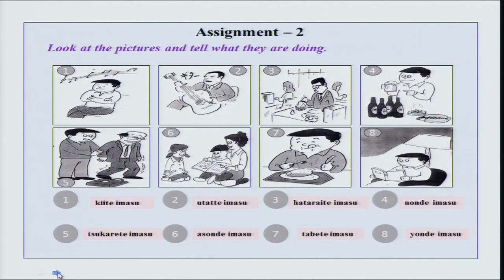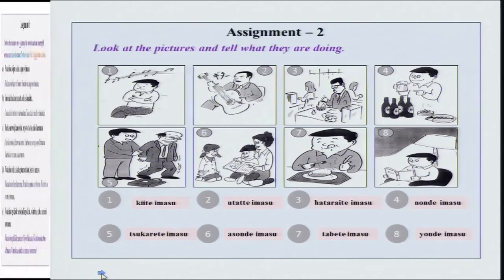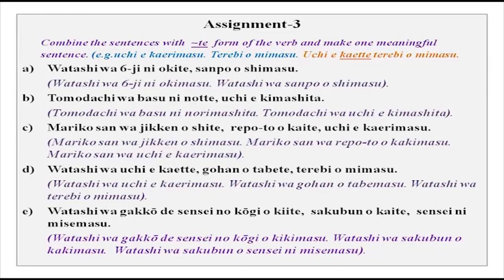You will see that you have ite, tte, nde, and only te for group 2. You have to keep in mind that group 1 is tte most of the time and group 2 is te. Now combine the sentences with te form of the verb and make one meaningful sentence. I am sure you can do this on your own.